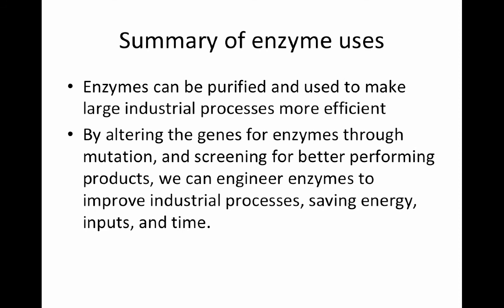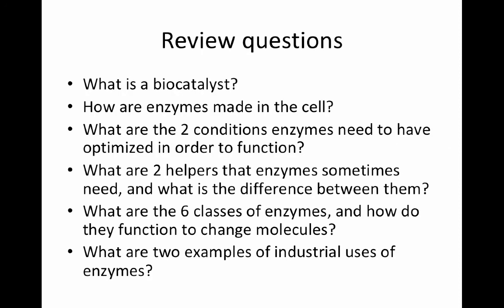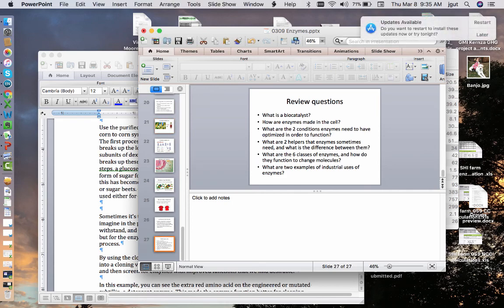To summarize enzyme uses: enzymes can be purified and used to make large industrial processes more efficient. By altering genes through mutation and screening for better-performing products, we can engineer enzymes to improve industrial processes, saving energy inputs and time. Here are your review questions — there will be a quiz following this lecture, and in class on Friday we'll be playing a game to review the basics of enzyme function.